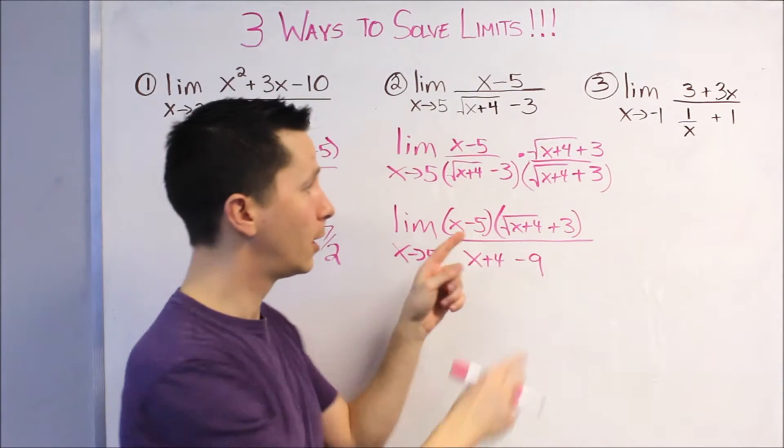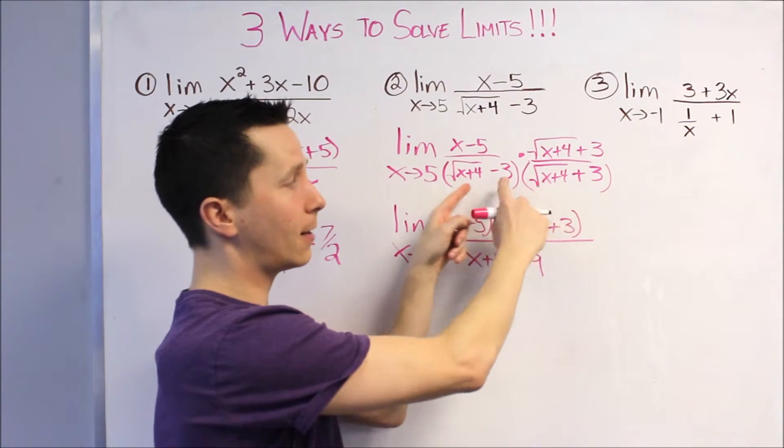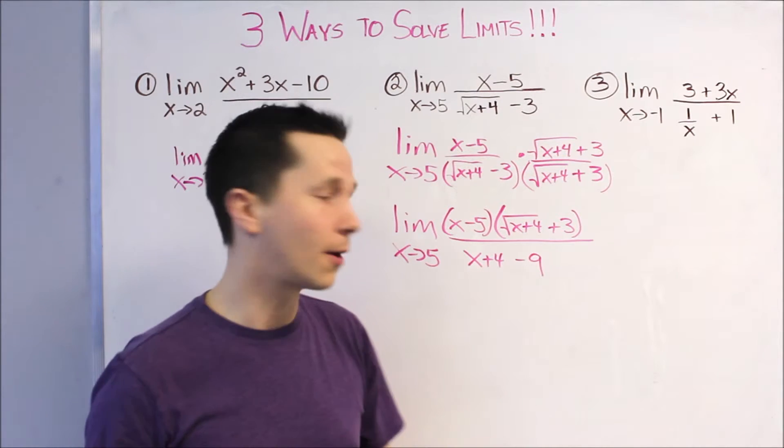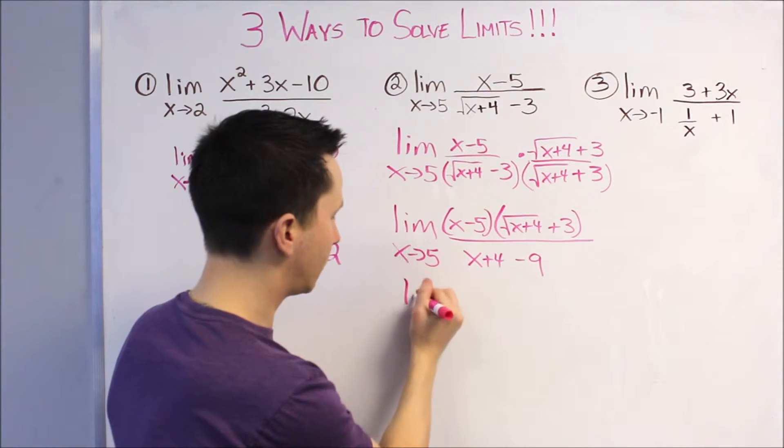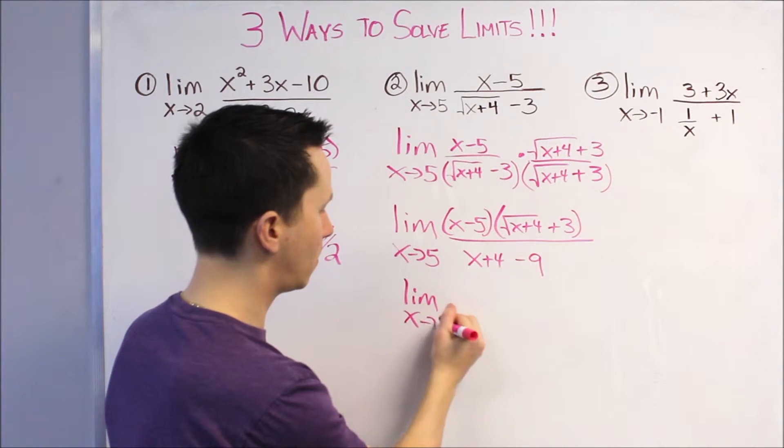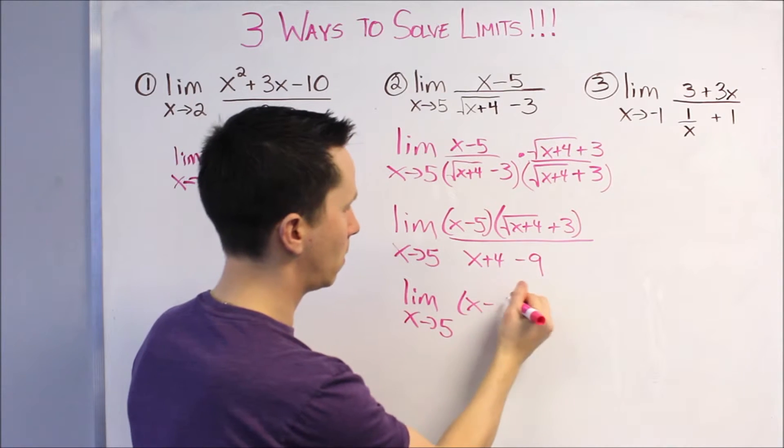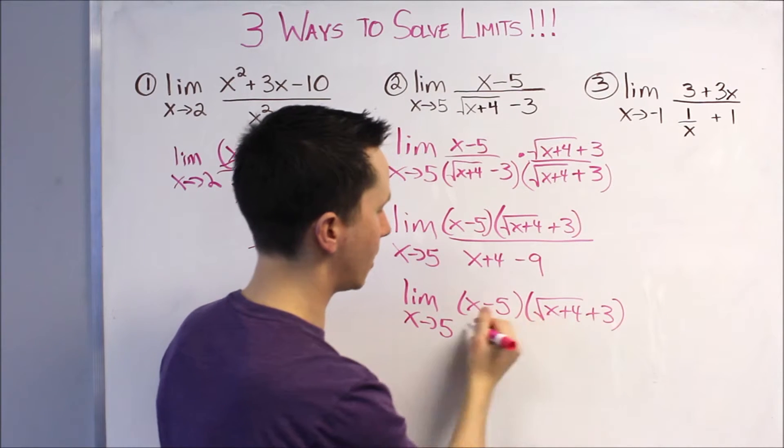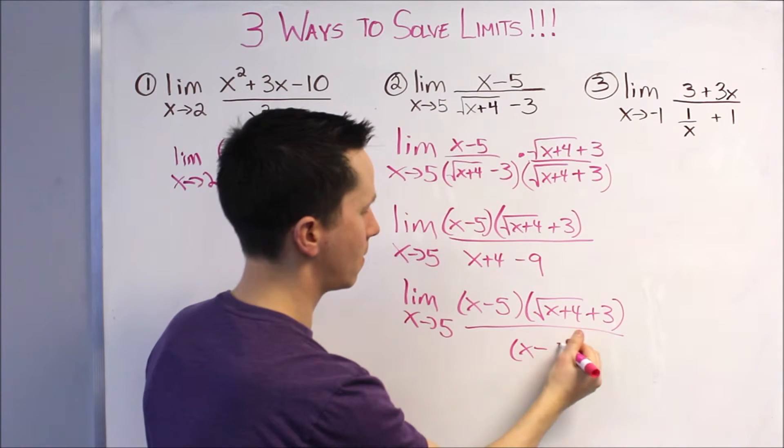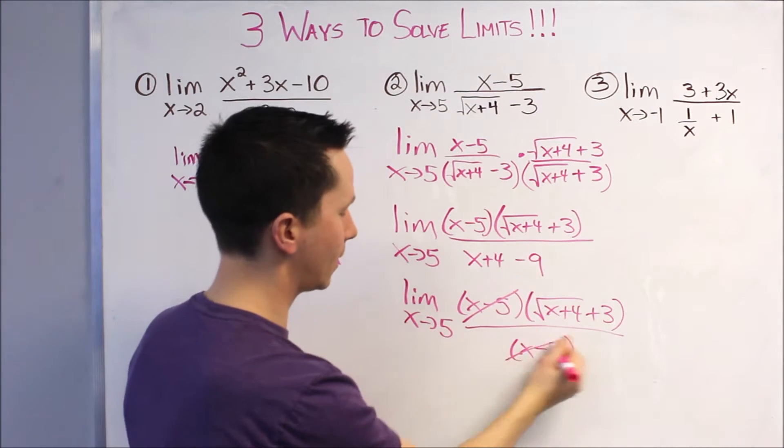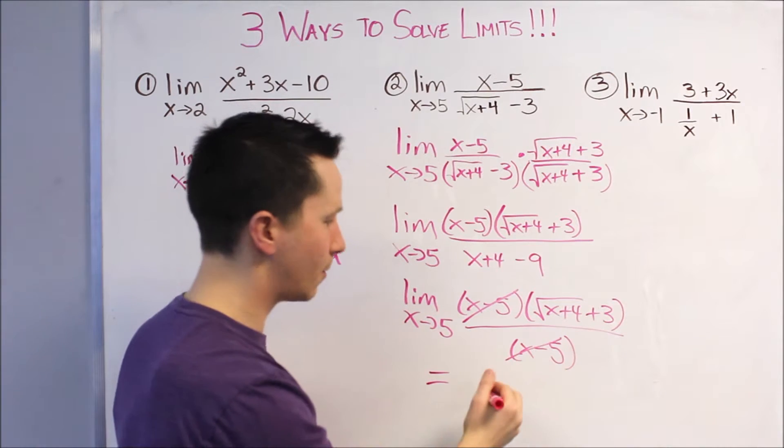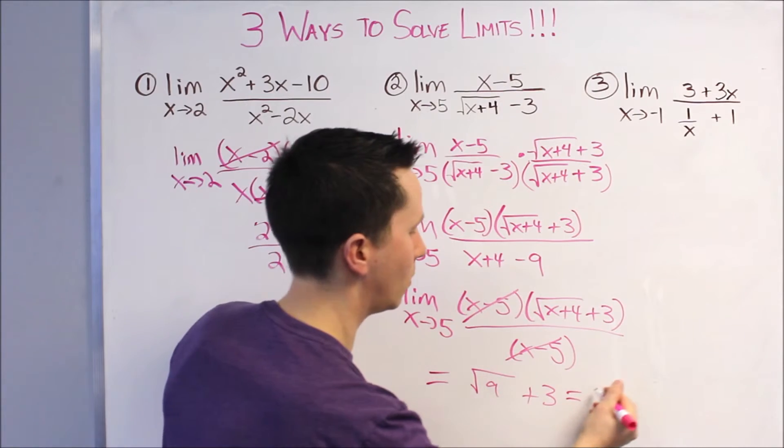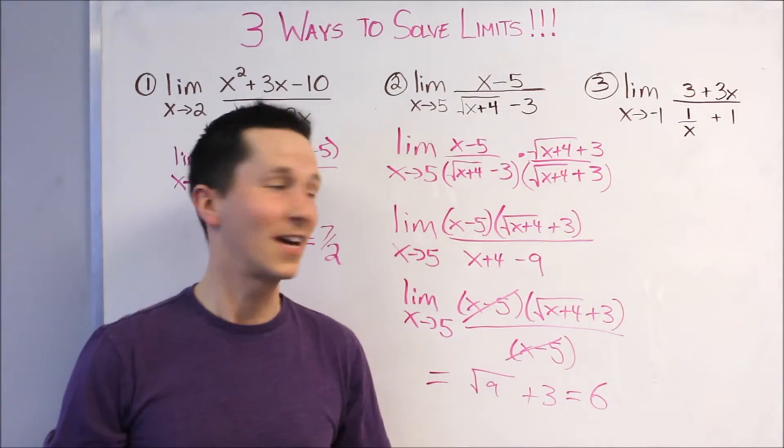Again, if you were to do the FOIL, you'd also have an inside term of negative 3 root X plus 4 and positive 3 root X plus 4. Those are going to cancel, and that's why they're not there. This can simplify so that the bottom is X minus 5. And, then, we can cancel our problem, sub in, and we get the square root of 9 plus 3, which is 6. So, the answer to that limit is 6.